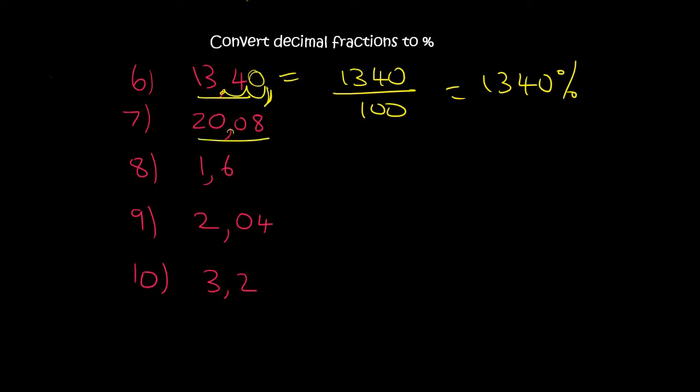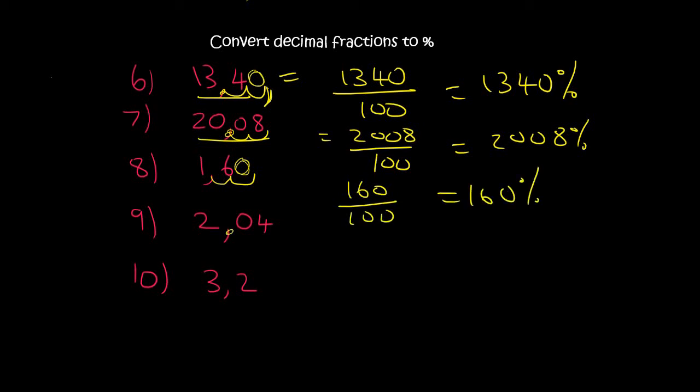20.08. So you move it two decimal places, and so that gives you 2008 over 100, and that's 2008%. Then 1.6, so you move it two decimals. In this empty piece, you'll just leave a 0, so that's 160%.